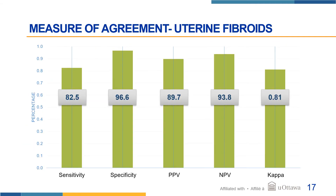When we looked at the validity of fibroid codes, we found the sensitivity, or the ability to detect cases, was 82%, while the specificity was 96%. This means that not all fibroid cases were detected, but when a case was identified as a fibroid case, it most likely was. Our kappa statistic was high, giving an almost perfect agreement.